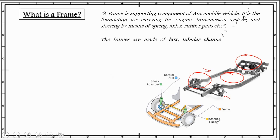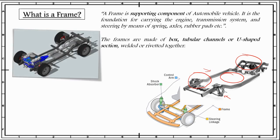The frames are made of box, tubular channels, or U-shaped sections, welded or riveted together. As you can see, this type of frame is made of box channels, whereas the cross section of this frame is made of tubular channels.